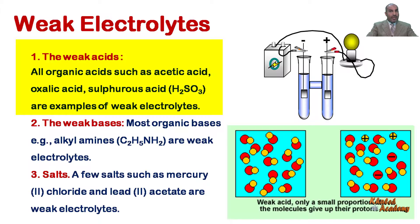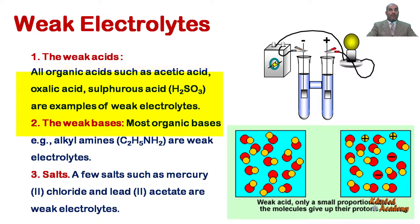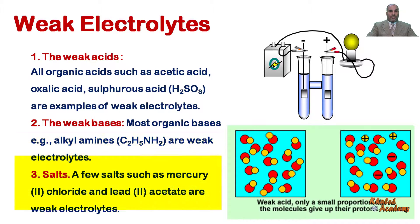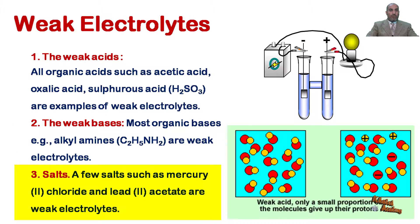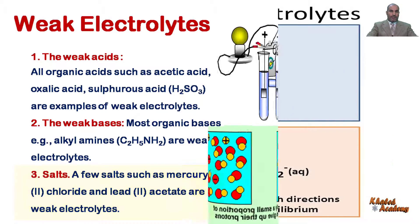The weak electrolytes include: weak acids like all organic acids such as acetic acid, oxalic acid, and sulfurous acid (H2SO3). The weak bases — most organic bases like alkyl amines — are weak electrolytes. A very few salts are weak electrolytes, like mercury chloride and lead acetate.